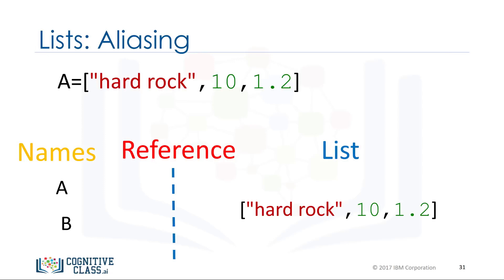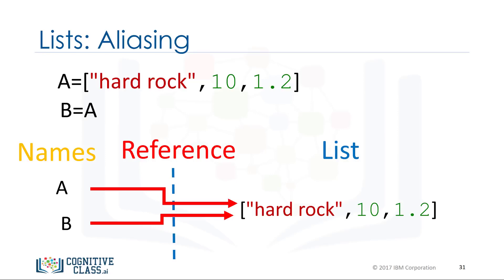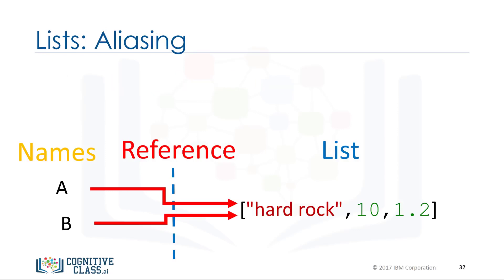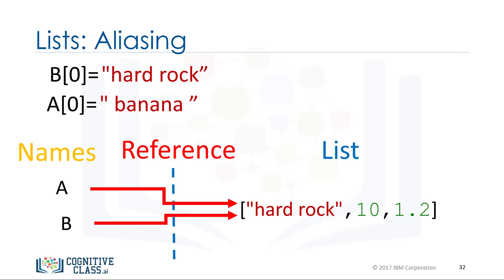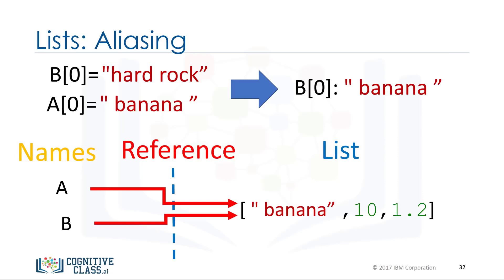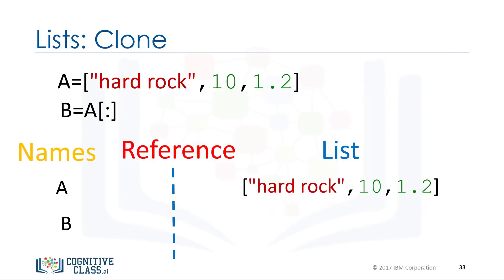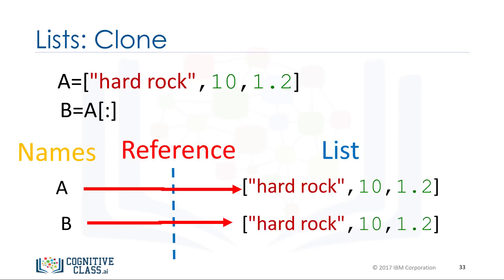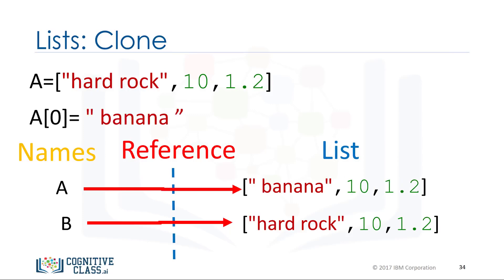When we set one variable b equal to a, both a and b are referencing the same list. Multiple names referring to the same object is known as aliasing. If we change the first element in a to banana, we get a side effect — the value of b will also change since a and b reference the same list. You can clone list a using the following syntax, so that variable b references a new copy of the original list. Now if you change a, b will not change.